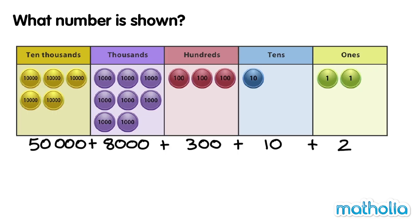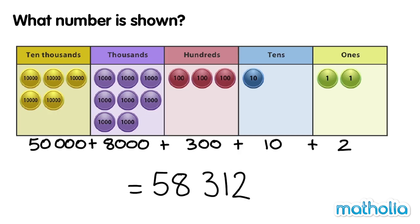Let's add the values of each place. 50,000 plus 8,000 plus 300 plus 10 plus 2 equals 58,312. The number shown is 58,312.